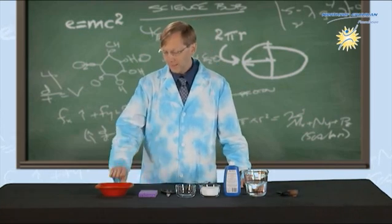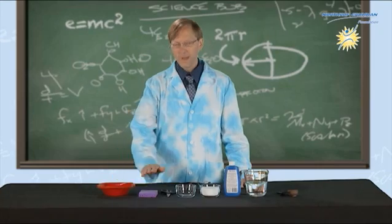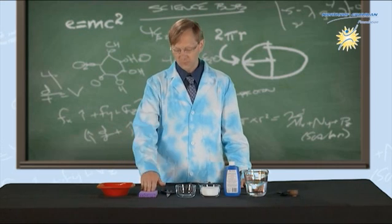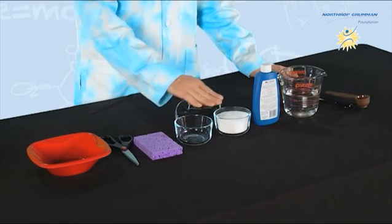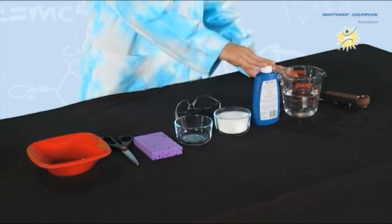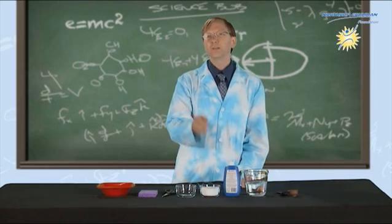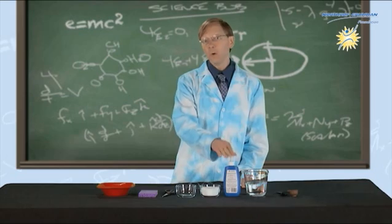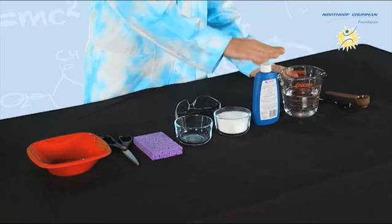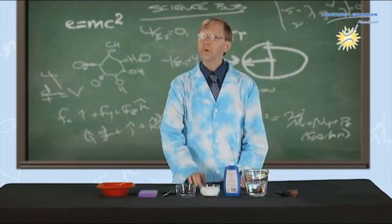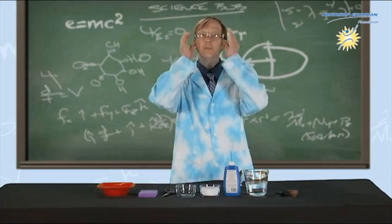Here's what you're going to need. A disposable plastic bowl, a nice, new, clean sponge, some scissors, a small mixing bowl, some salt, some liquid bluing, which you can get at the laundry aisle in your grocery store, or you can always get it online, some water, some mixing spoons, and of course, your safety goggles.